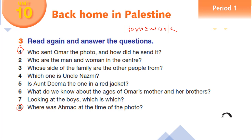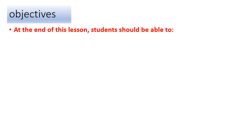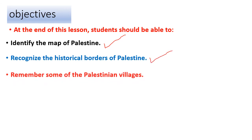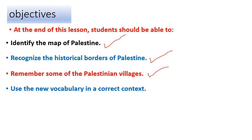Now let's check: did we achieve the objectives? At the end of this lesson, students should be able to: identify the map of Palestine — yes, done; recognize the historical borders of Palestine — achieved; remember some Palestinian villages — yes, achieved; and use the new vocabulary in a correct context — yes, achieved. So let's say goodbye. This is the end of this session for today. Have a nice night. Goodbye!